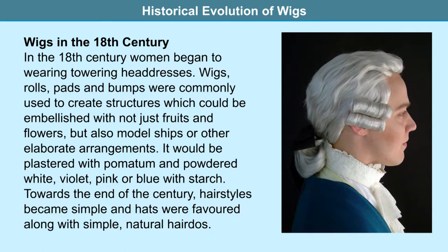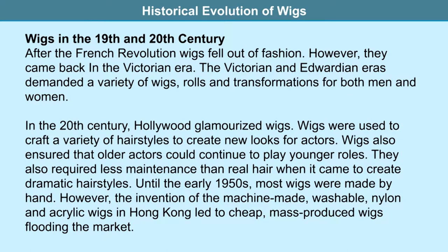Towards the end of the century the itching became unbearable, and hairstyles became simple. Hats were favored along with natural and simple hairdos. After the French Revolution, wigs fell out of fashion. However, they came back in the Victorian and Edwardian era, which demanded a variety of wigs, rolls and transformations for both men and women. Even American presidents John Adams and James Monroe used to wear powdered wigs, though George Washington — the first president — had real long hair which he braided into a ponytail.